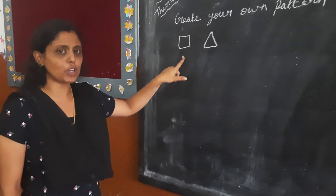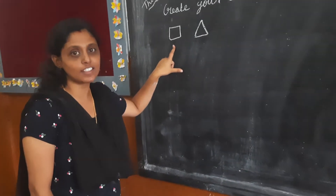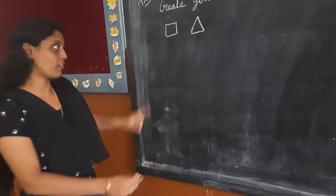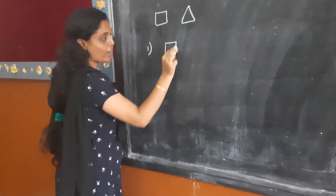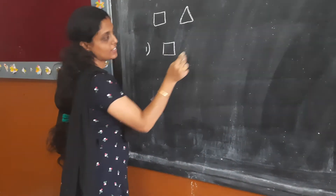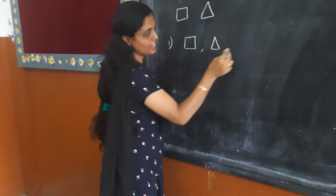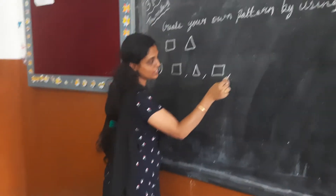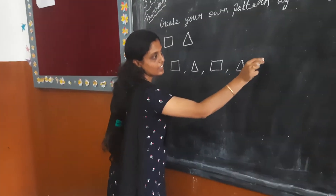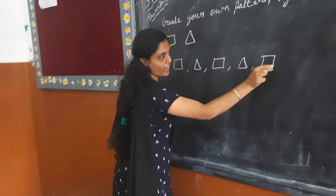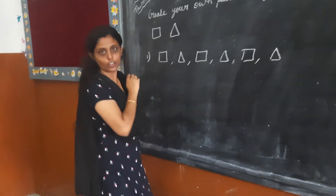Children, can you say what patterns we can create? First, we can create here: square, triangle, square, triangle. Here it is also a square and triangle. This is the pattern.